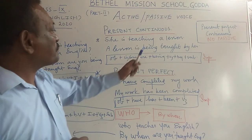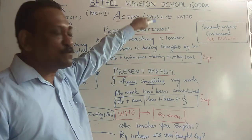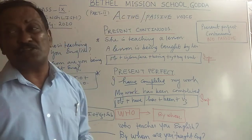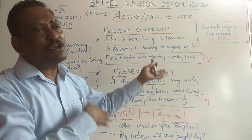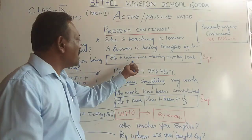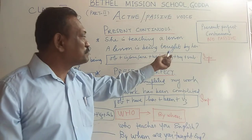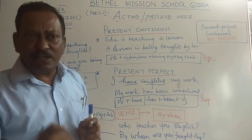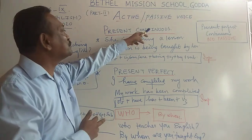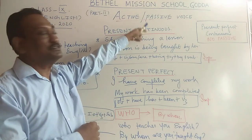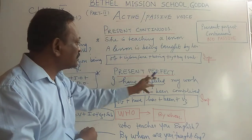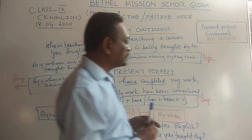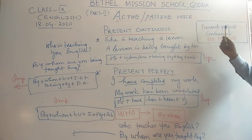Remember, the most important thing while discussing active and passive voice is to be aware of the changes: how the subject is changed, how the object is changed, what helping verb is used, where we use 'by', and the formulas. Be thorough with the formulas and keep solving sentences according to the kinds of tenses — present continuous, present perfect.